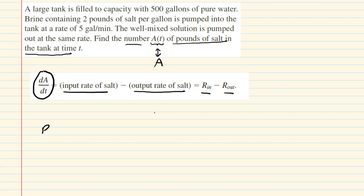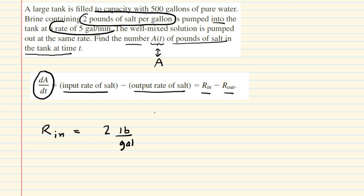Let's begin with the input rate of salt using the given information. Brine contains two pounds of salt per gallon, and that is being pumped into the tank at a rate of five gallons per minute. Notice what happens if we multiply the two pounds per gallon by the five gallons per minute — the gallons cancel, and this gives us 10 pounds per minute.